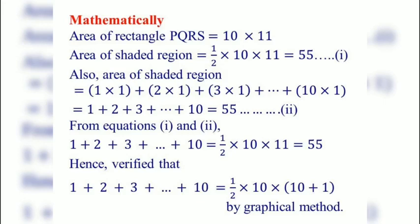From equation 1 and 2, we got 1 plus 2 plus 3 up to plus 10 is equal to half into 10 into 11, that is equal to 55. Hence, it is verified that 1 plus 2 plus 3 up to plus 10 is equal to half 10 into 10 plus 1. This is proved by graphical method.